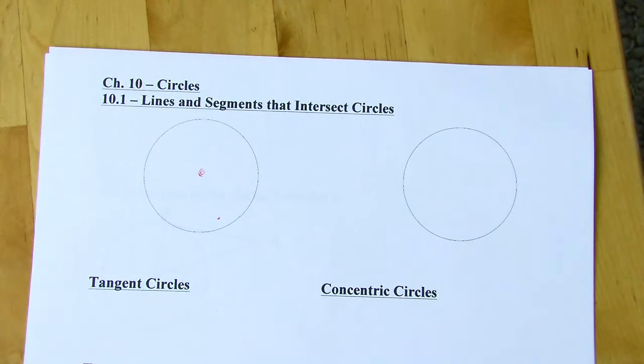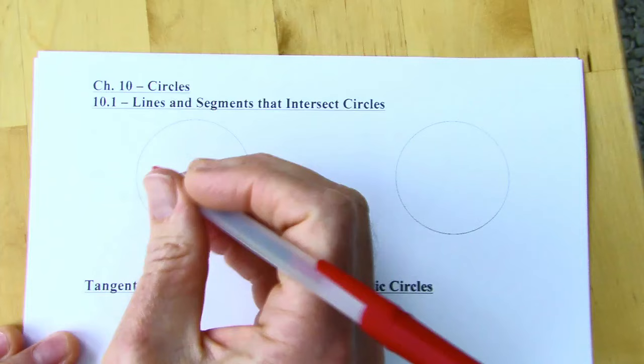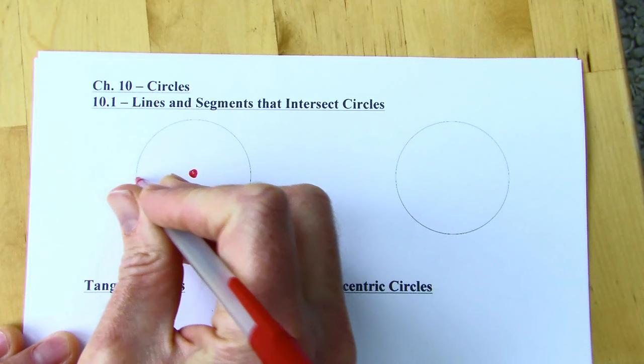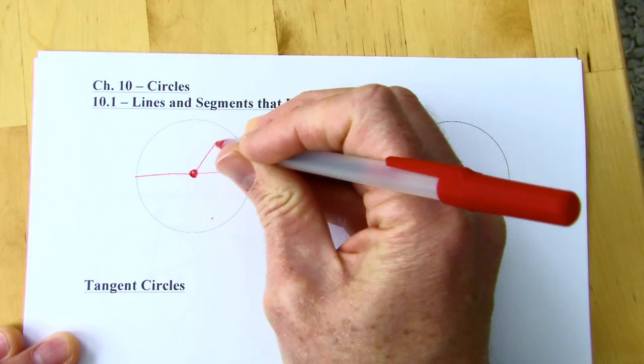Chapter 10 is called circles. Here's some circles. So just some quick vocab. This is the center of the circle. And you probably know what the diameter and the radius is, but I'm going to put it in anyway. The diameter is a line segment that goes from one end of the circle to the other — it passes through the center, so it's the whole distance across. A radius would be the distance from the center of the circle to any point on the outside of the circle.